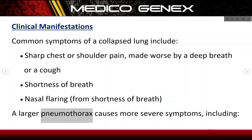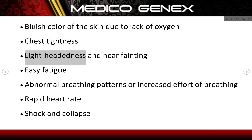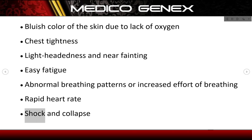A larger pneumothorax causes more severe symptoms, including: bluish color of the skin due to lack of oxygen; chest tightness; lightheadedness and near fainting; easy fatigue; abnormal breathing patterns or increased effort of breathing; rapid heart rate; and shock and collapse.